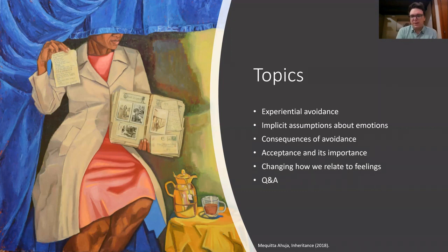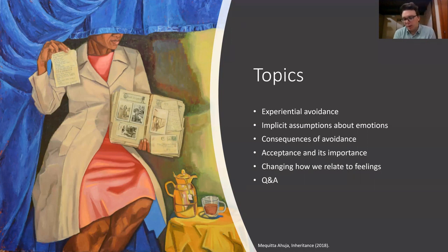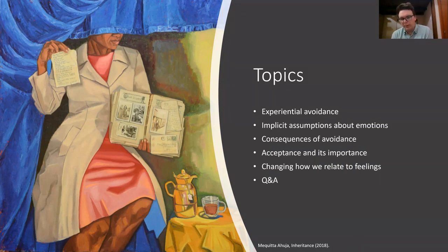We will talk about implicit assumptions about emotions, because one of the reasons we avoid something and not avoid other things is because of the way we see these things — what we anticipate might happen, or what effects something might have on us or people around us. These implicit assumptions are really why we avoid emotions, and also why we avoid them in the way that we do. To stop avoiding something, we have to examine why we're doing it in the first place.